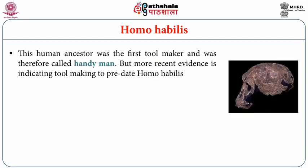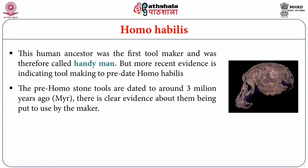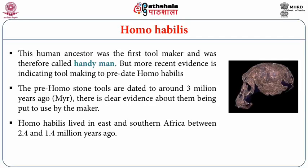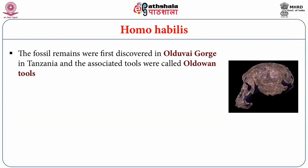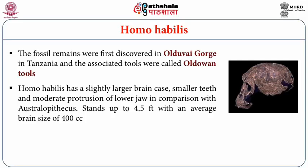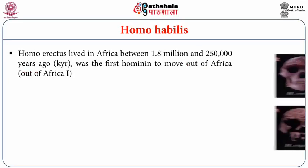Homo habilis was the first tool maker and was therefore called the handyman. However, more recent evidence indicates tool making predates Homo habilis — pre-Homo stone tools are dated to around 3 million years ago. Homo habilis lived in eastern and southern Africa between 2.4 and 1.4 million years ago. Fossil remains were first discovered in Olduvai Gorge in Tanzania and the associated tools were called Oldowan tools. Homo habilis had a slightly larger brain case, smaller teeth and moderate protrusion of the lower jaw, standing up to 4.5 feet with an average brain size of 400 cc.